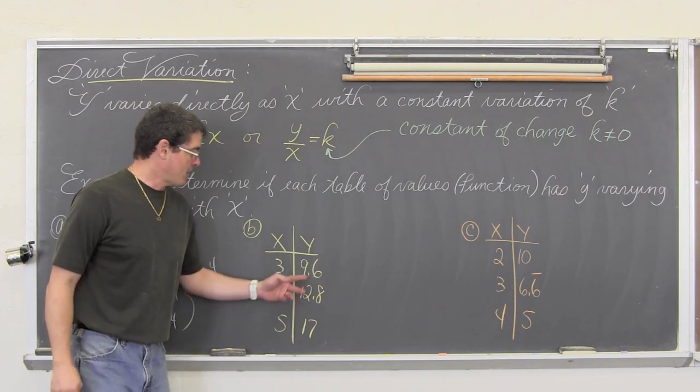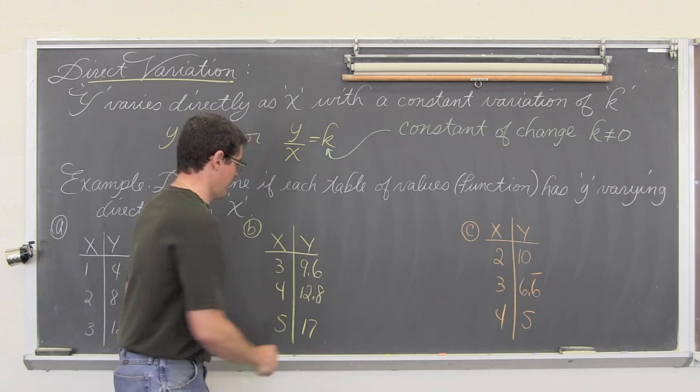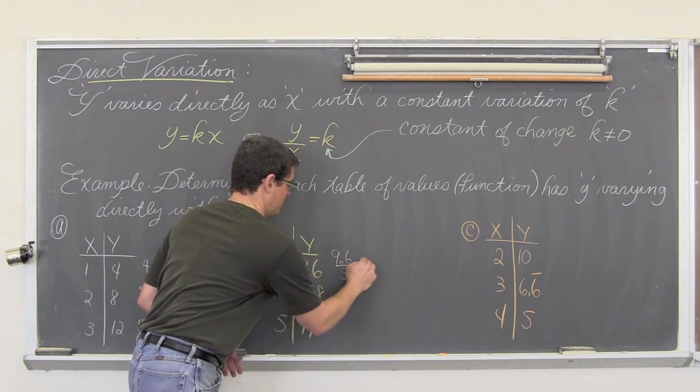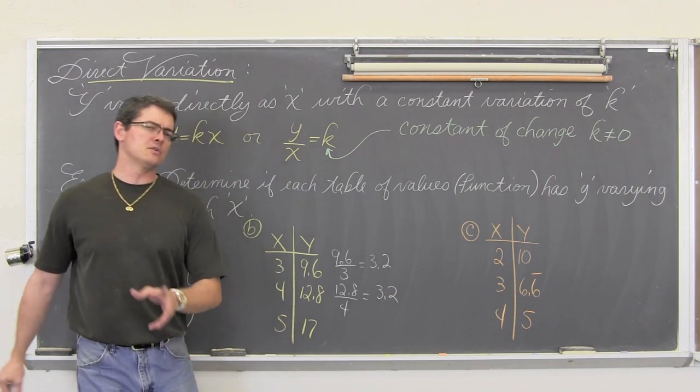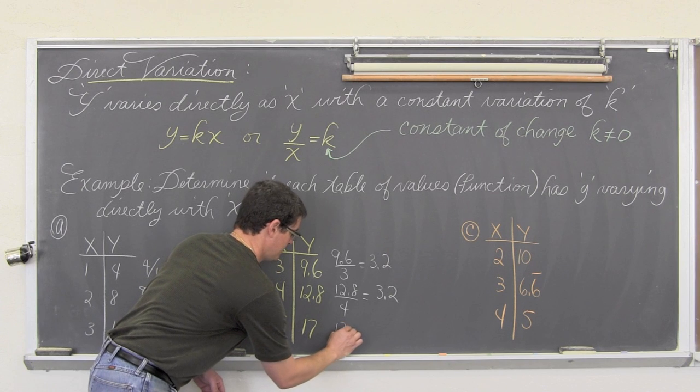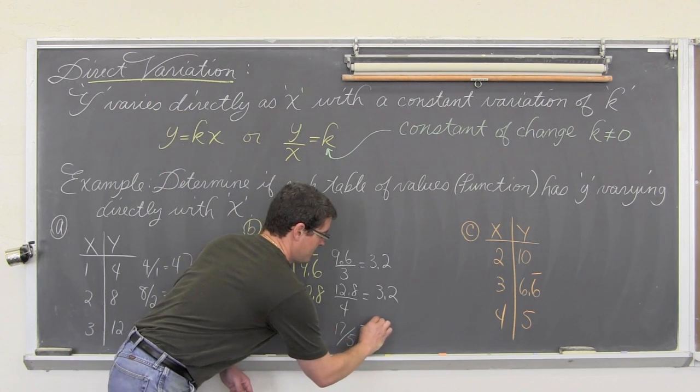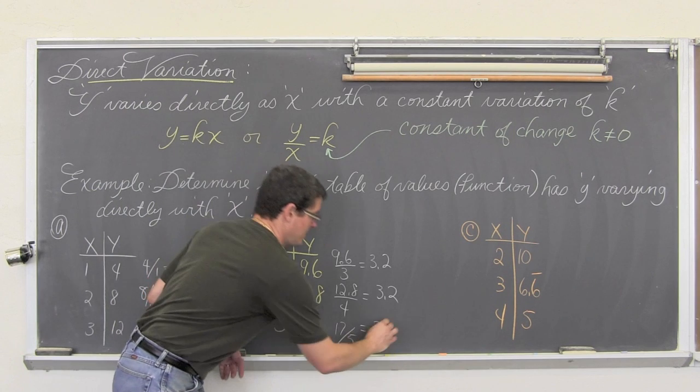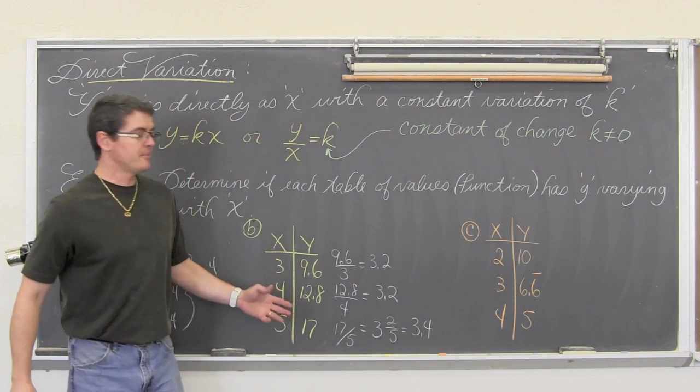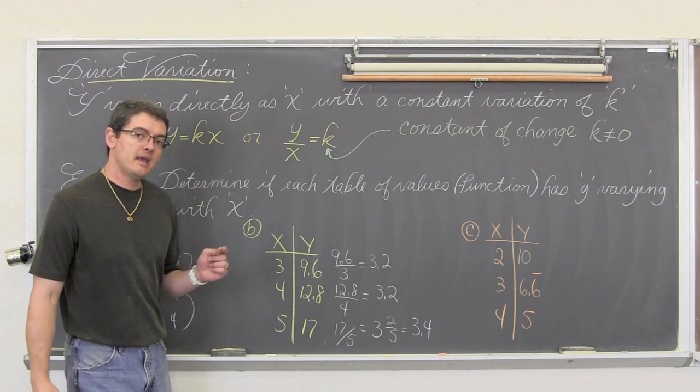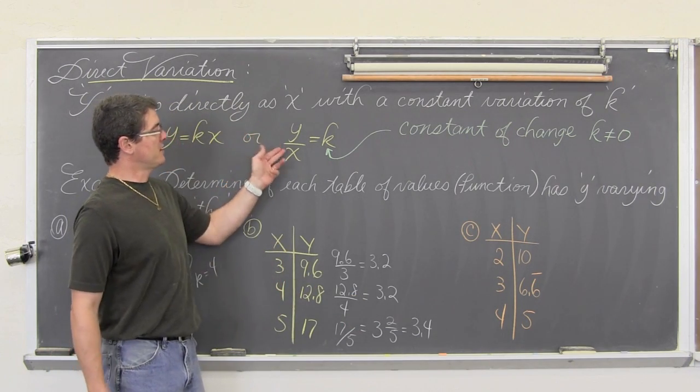This example here, where we have 9.6 divided by 3, 12.8 divided by 4, and 17 divided by 5, are all those going to be the same? Well, 9.6 divided by 3 is going to be 3.2, and 12.8 divided by 4 is also going to be 3.2. So we are looking pretty good so far, but 17 divided by 5 is going to be...let's see, how many 5's are in 17? 3 times 5 is 15, so that is going to be 3 and it is 15, so it will be a remainder of 2. So that is 3 and 2 fifths. Well, 2 fifths is 0.4. So this table of values, this function, does not represent a direct variation scenario because we do not have the same k value, we do not have the same ratio for each of the corresponding y and x values.